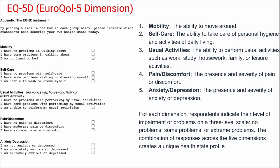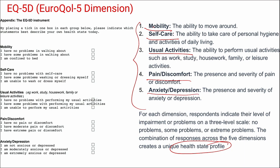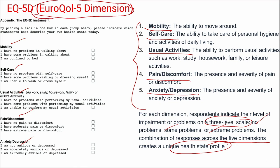Next is EQ-5D or EuroQOL 5 Dimensions, used to measure the health state profile of populations or individuals. It covers five domains: mobility, self-care, unusual activities, pain and discomfort, and anxiety and depression. Respondents rate on a three-level Likert scale of no problems, some problems, and extreme problems. The combination of responses across the five dimensions creates a unique health profile.